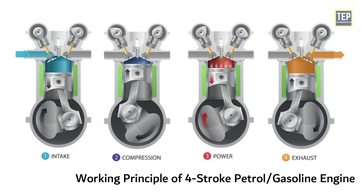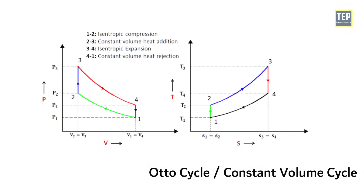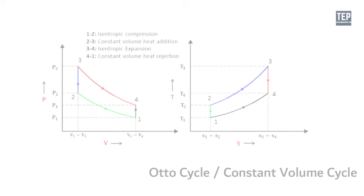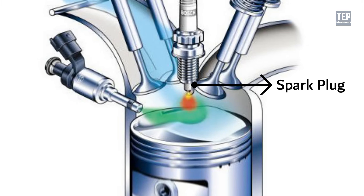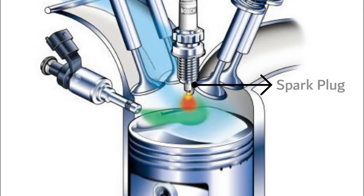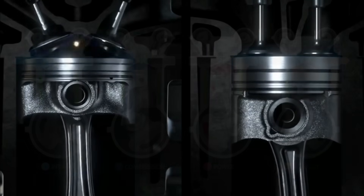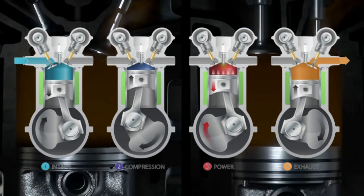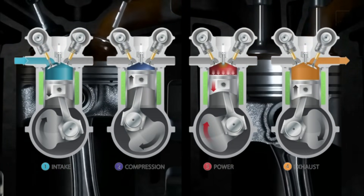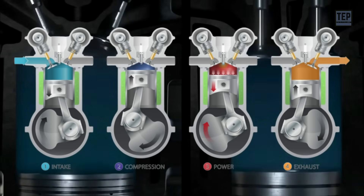Now let's look at the working principle of a four-stroke petrol engine. The petrol engine works on the principle of the Otto cycle, also known as the constant volume cycle. The spark plug fitted at the top initiates the ignition of the petrol. In a four-stroke engine, all events — intake, compression, power, and exhaust — are completed in two revolutions of the crankshaft.